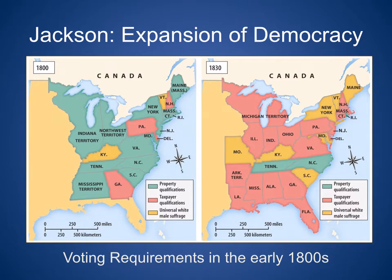We're expanding democracy under Jackson. The voting requirements in the early 1800s — in 1800 it was you needed to have property to vote. Now it's more: do you pay taxes, or are you just white and male?